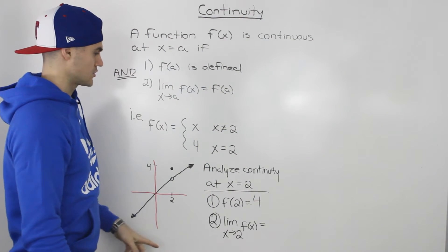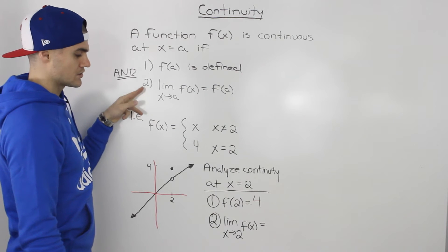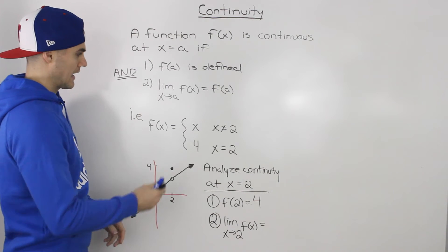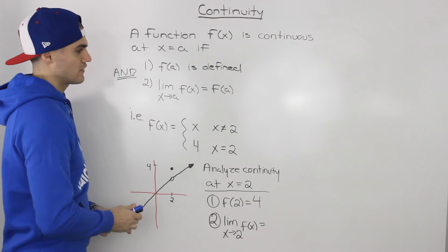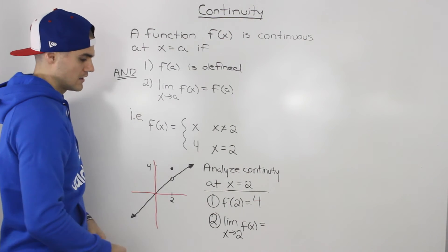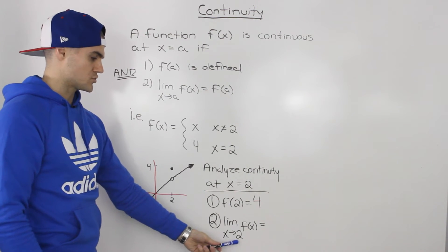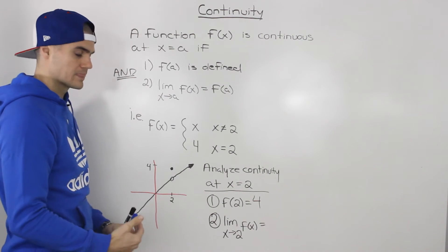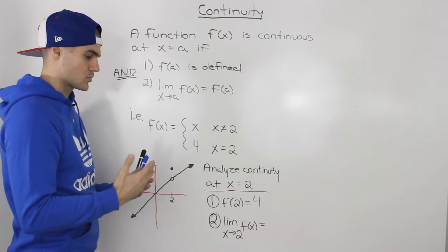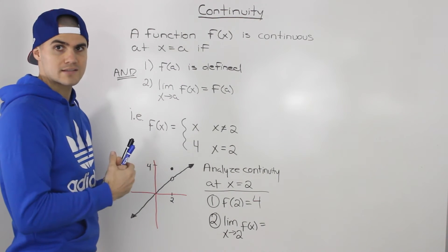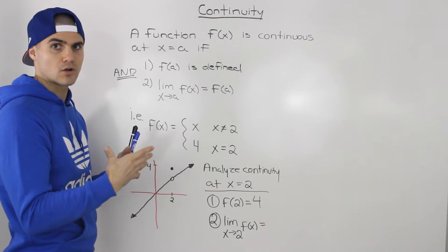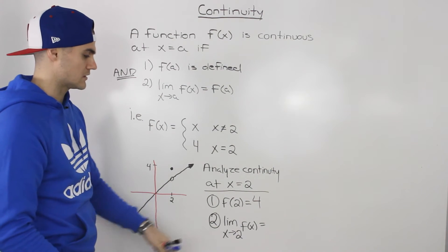And the second condition we have to look at when analyzing continuity is that the limit as x approaches that certain a value of f of x is equal to f of a. So the limit as x approaches two of f of x, to find that, we have to find the limit as x approaches from both the left side and the right side. And if it's approaching a single y value, then we know that that's what the limit equals.